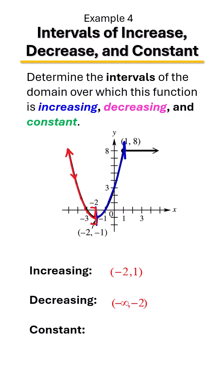Where is our graph constant? Remember constant is the term where it stays the same. Horizontal line does not increase, does not decrease. So we can see here that it starts right here at one and it's going to go on forever to positive infinity.